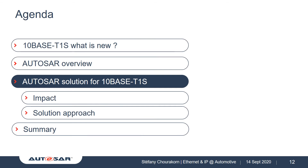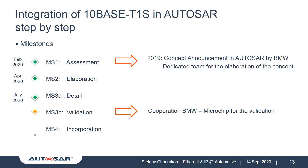After getting insight from 10BaseT1S specificities and learning who AUTOSAR is, it is time to see which changes in the specification need to be done to support 10BaseT1S. Before getting into the details, I would like to briefly explain how new features are introduced in AUTOSAR. Because many actors take part in the consortium, there are many processes, and introducing a new technology requires establishing a so-called concept. In our case, BMW is the concept owner who announced the beginning of the activity in 2019. A concept needs to reach milestones defined by the consortium and fulfill requirements in order to establish its maturity.